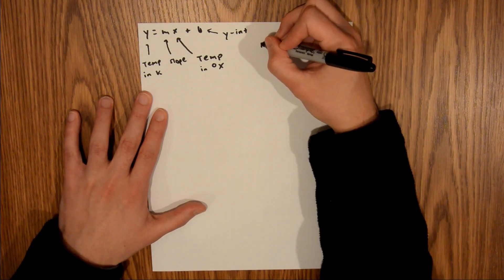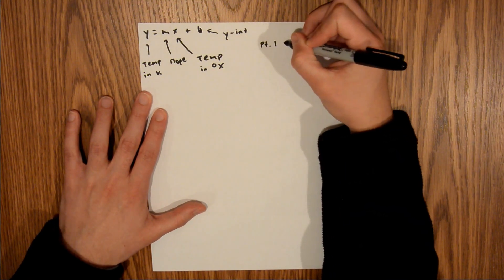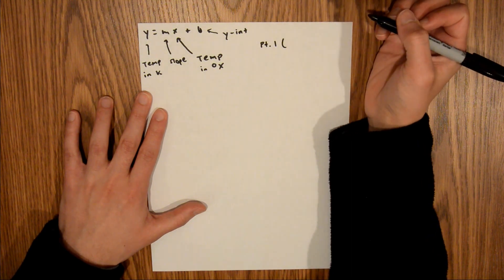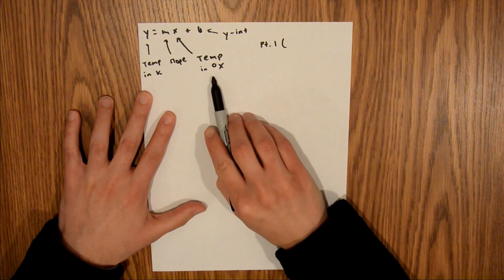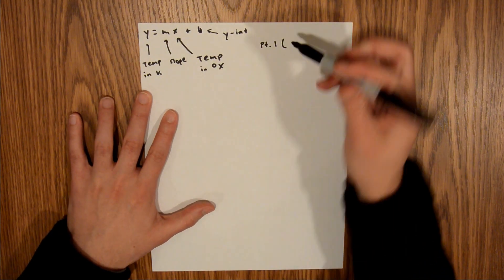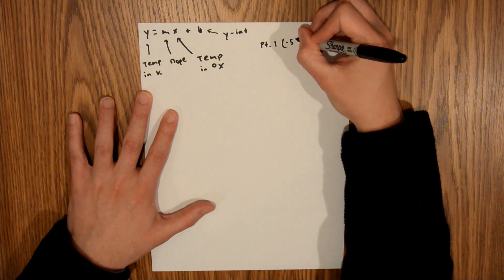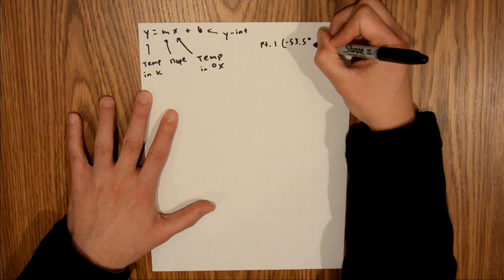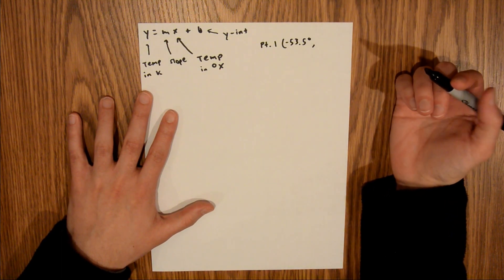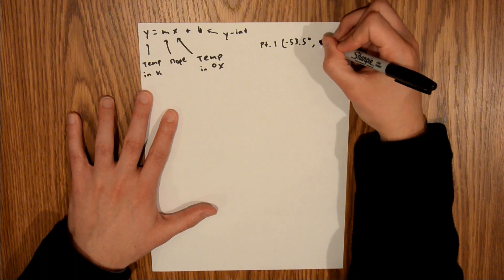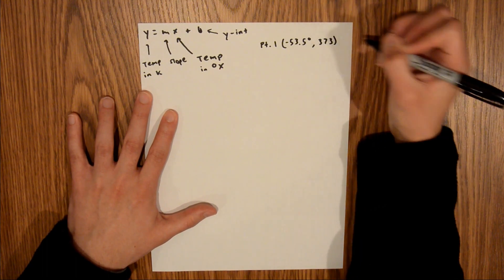And so, I'm just going to write those out over here. So, point 1, and I'm going to make this one the boiling data point, and we're told that in terms of degrees x, that is negative 53.5 degrees. And then we are told at the end of the problem to approximate water's boiling point as 373k. So, there's our first data point.